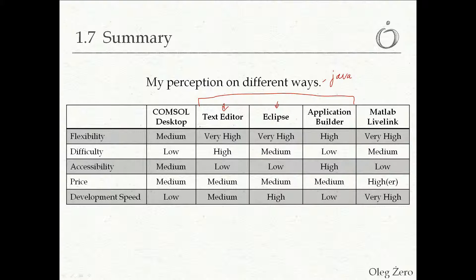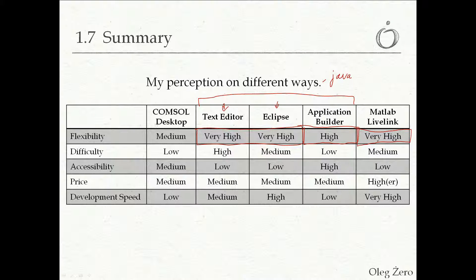With text editor or Eclipse, you're not only able to apply for-loops or condition statements inside the model, but you can think of expanding them — giving input classes or output classes, streaming simulations through different models, splitting things, creating customized graphical user interfaces, and making them more robust using try-catch statements. Similarly, MATLAB Live Link I would also consider of very high flexibility. Compared to that, the Application Builder I would rate as just high, because the GUI structure is somewhat forced upon you, though it still makes models more flexible compared to the console desktop.